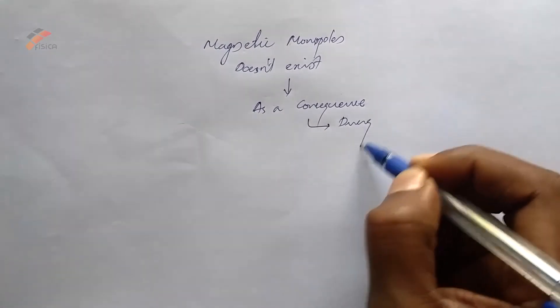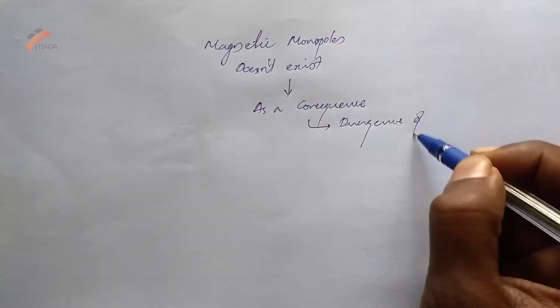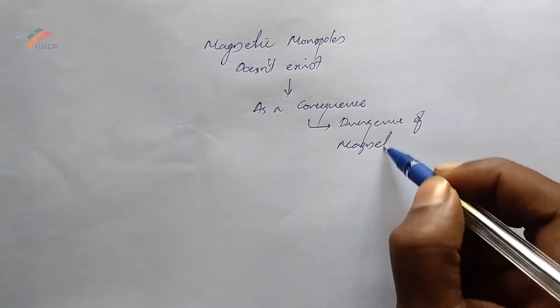As a consequence, divergence of magnetic field is always zero.